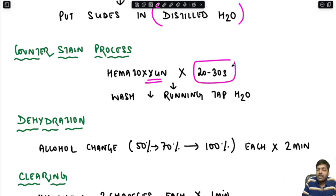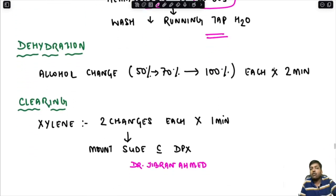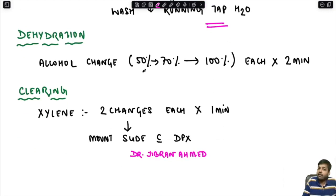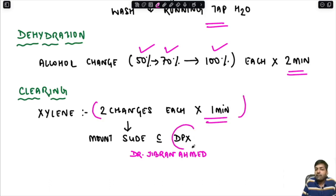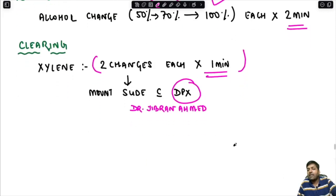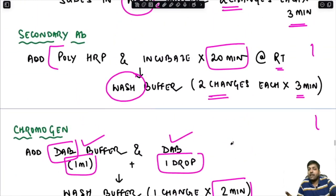Now the staining is complete. Carry out dehydration through an alcohol chain: 50%, 70%, and 100% alcohol, each for two minutes. Then clear in xylene — two changes, each for one minute. Finally, mount the slide with DPX. With this, we have completed the entire IHC process and procedure carried out in our institute.